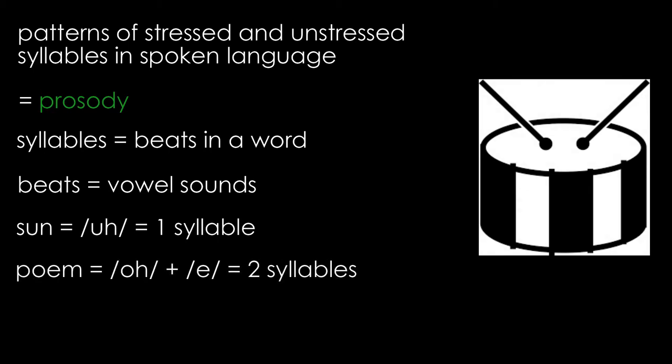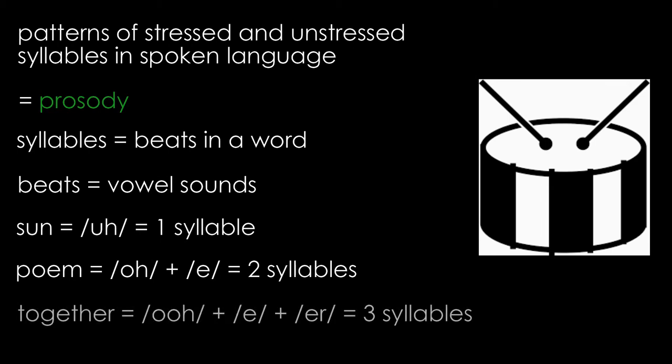It therefore has one syllable. The word 'poem' has two vowel sounds — long o and short e — and therefore has two syllables. The word 'together' has three vowel sounds — long u, short e, and long ur — and therefore has three syllables, and so on.